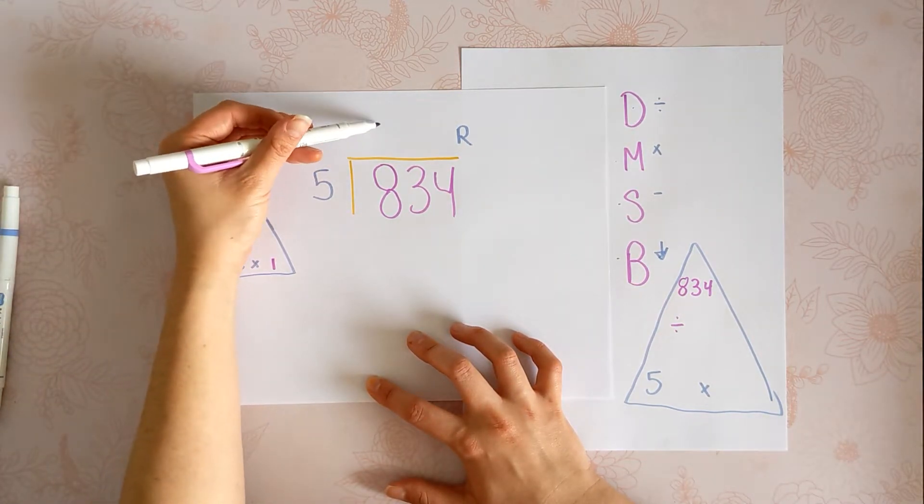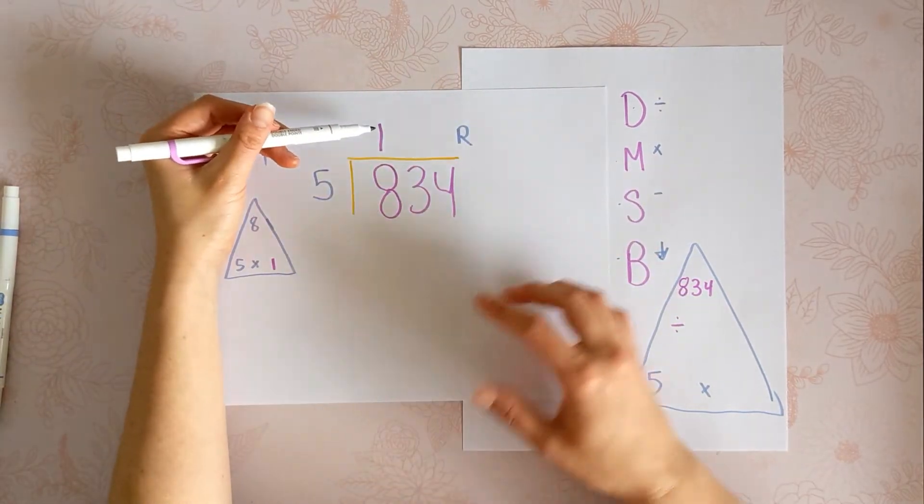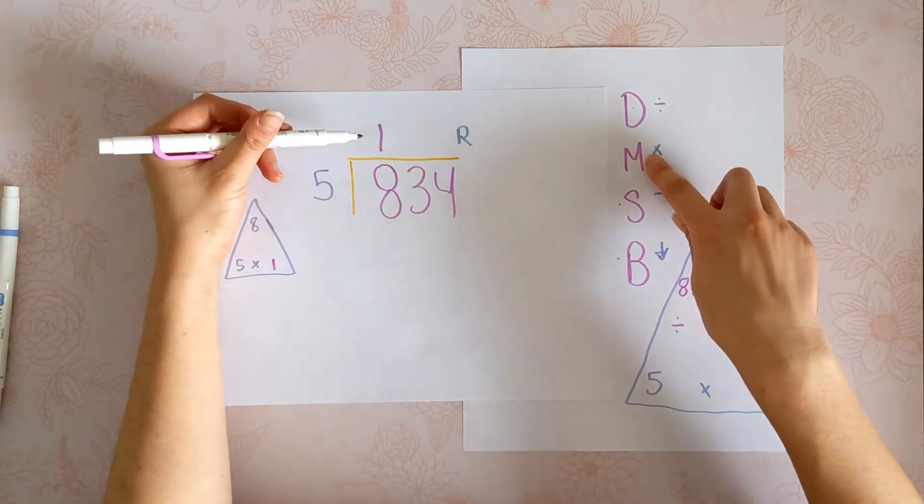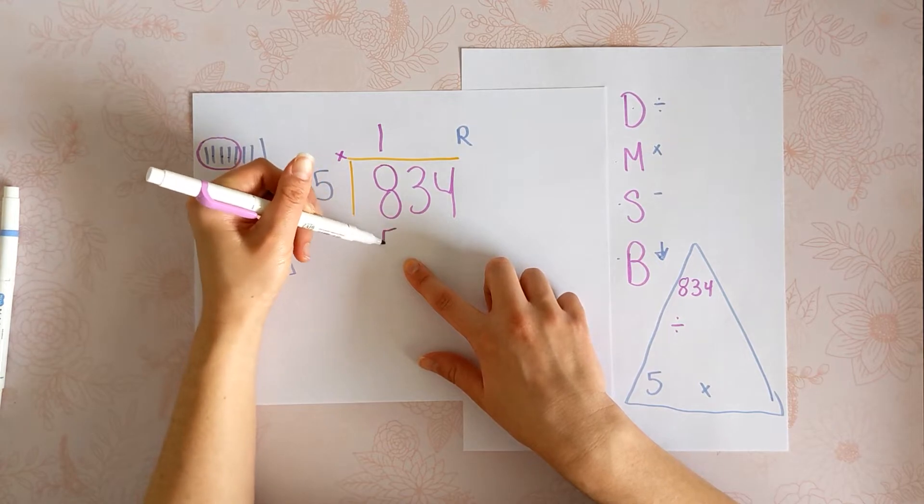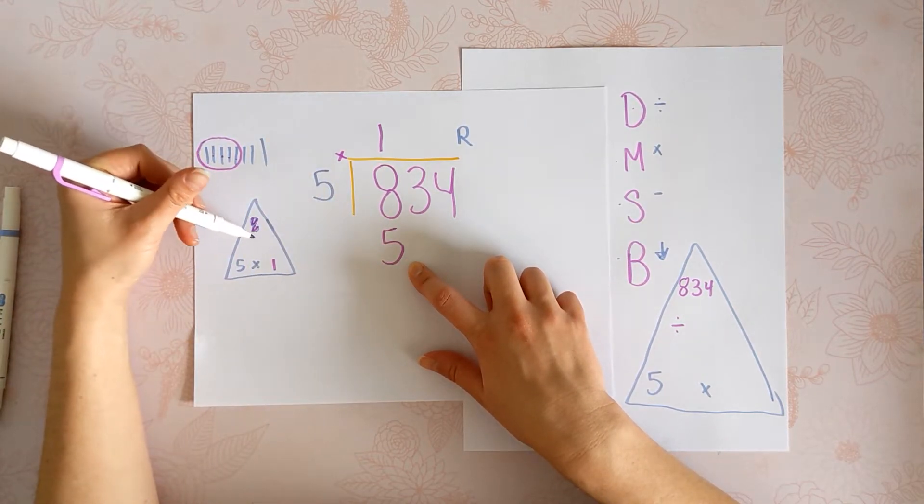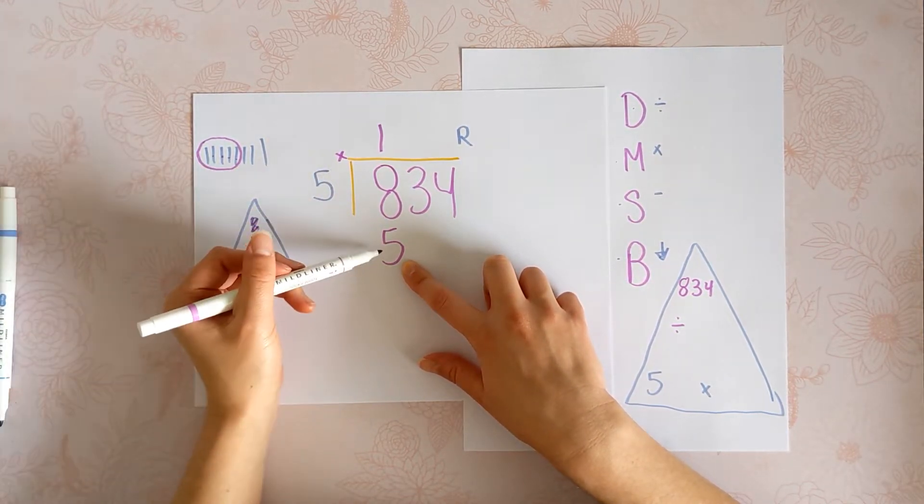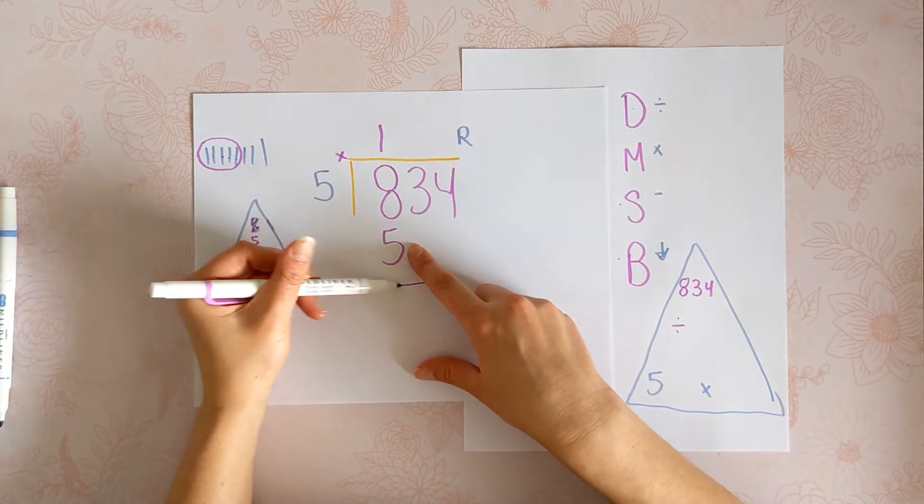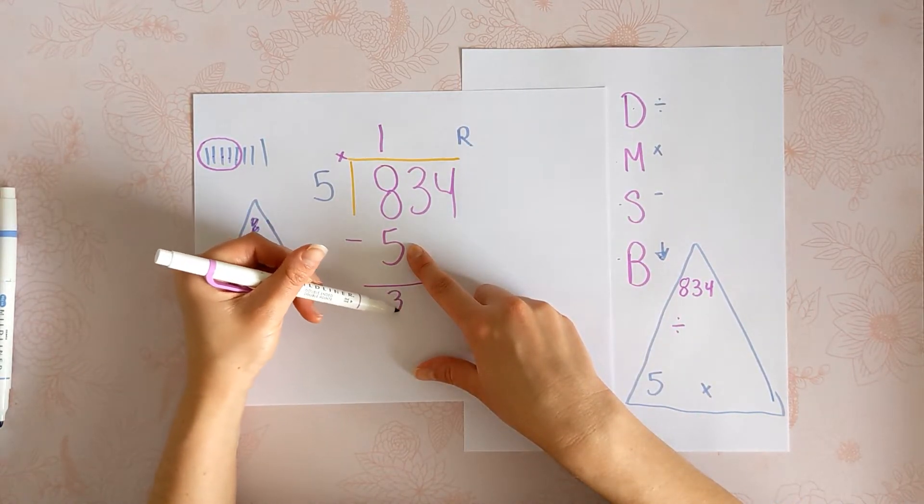Okay. And now we're going to multiply the last thing we touched with this 5. 1 times 5 is 5. Next, we're going to subtract the last thing we touched. 8 minus 5 is 3.